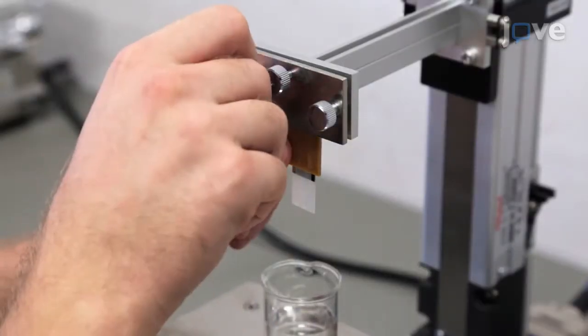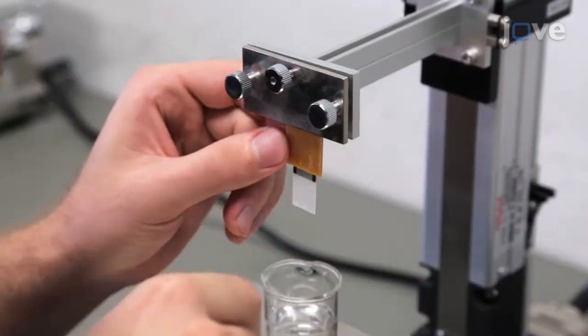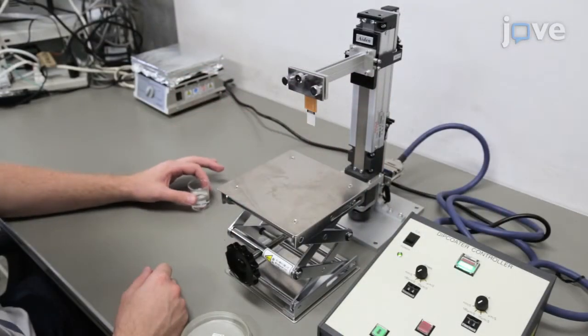Then, return the device to the dip coater with the same orientation. Remove the silanization agent from the dip coater.